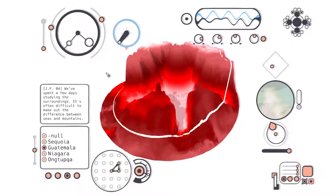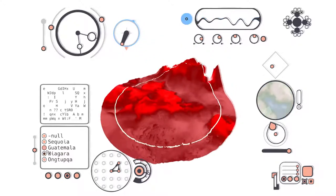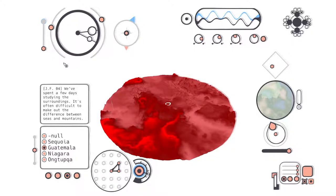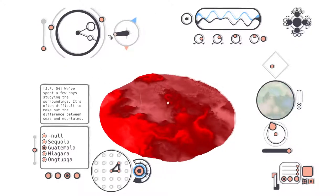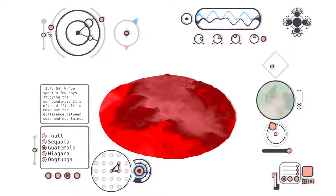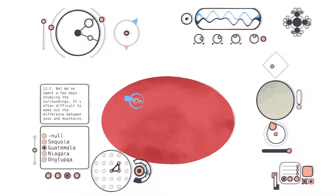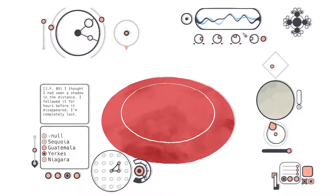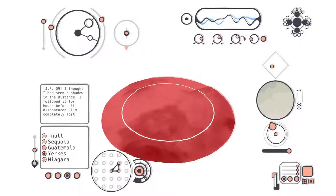Why is this? Oh, that's because that's what we did last time. So next we want Guatemala. Spend a few. Wait, what do you mean? Oh, hello there. I'll give Muir secrets. Oh, Yerkes. I thought I'd seen a shadow in the distance. I followed it for hours before it disappeared. I completely lost. Same. All right, so that's about right.